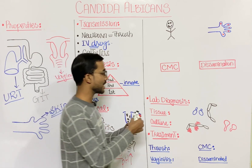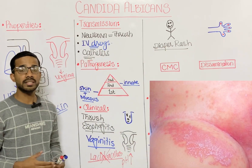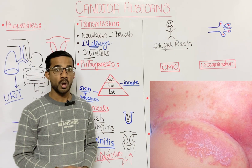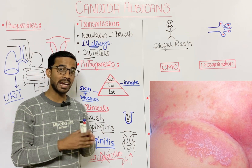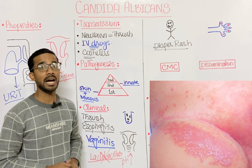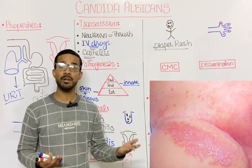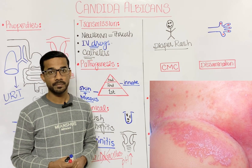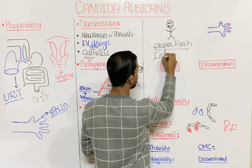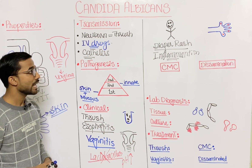Another clinical finding is diaper rash. The favorable conditions for Candida albicans to grow are warm and humid conditions. These conditions are provided when there is a delay in changing a baby's diaper — the area becomes wet and warm, which is favorable for Candida. This causes inflammation at the anal area, known as diaper rash.